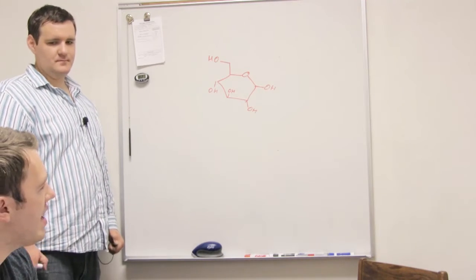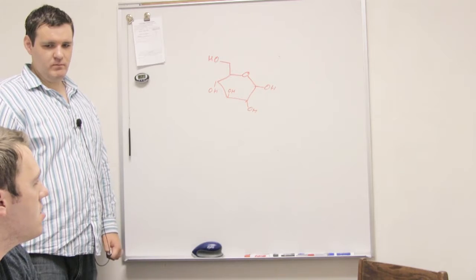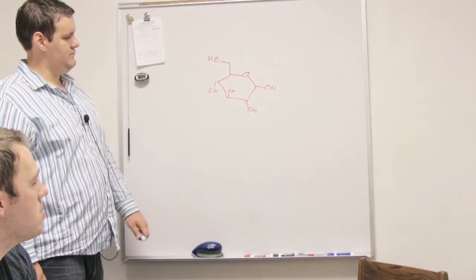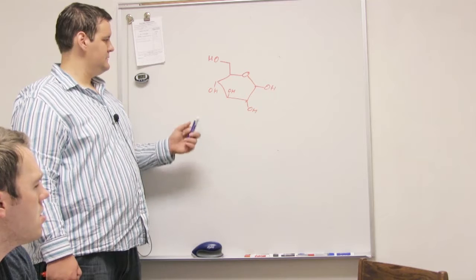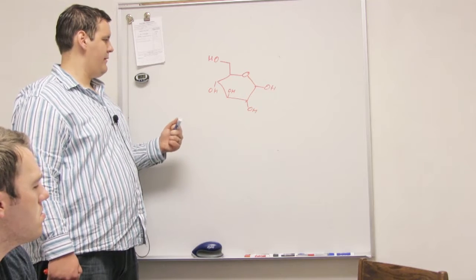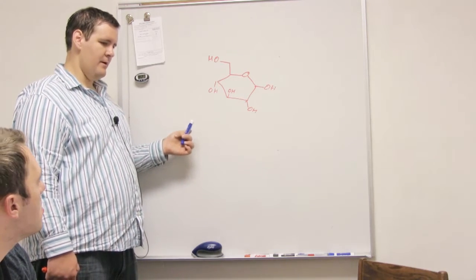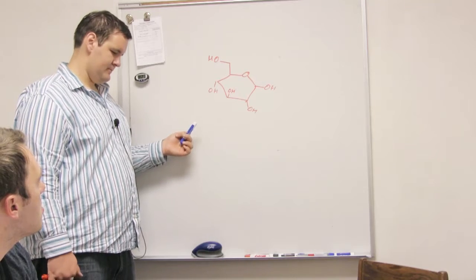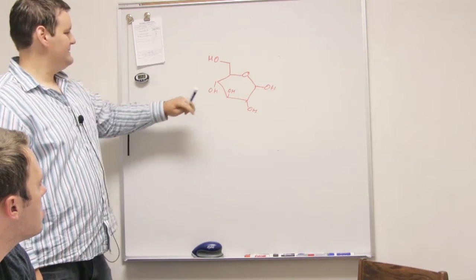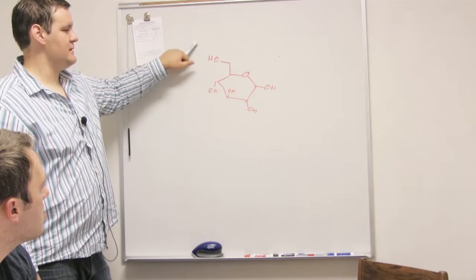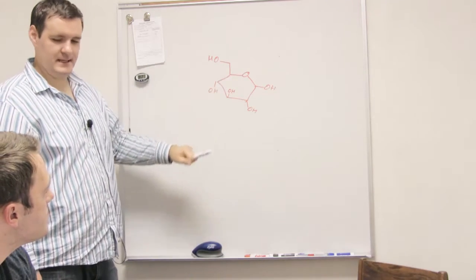To find out if it's a D or an L sugar from the structural drawing: D is when the reference group is up, and L would be if it's down.